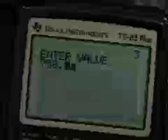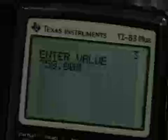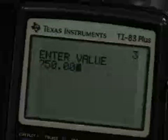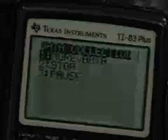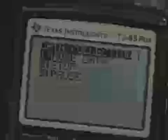When you've reached 50 milliliters and the CBL reading is stable, press trigger. Enter 50.00 milliliters on your calculator. Press enter. You're now ready to stop.